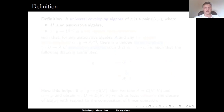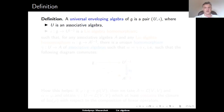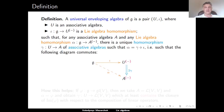Let us discuss the definition of the universal enveloping algebra. A universal enveloping algebra of G is a pair (U, I), where U is an associative algebra and I is a Lie algebra homomorphism from G to the Lie algebra associated to the associative algebra U.